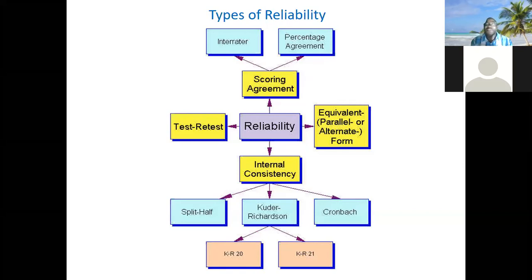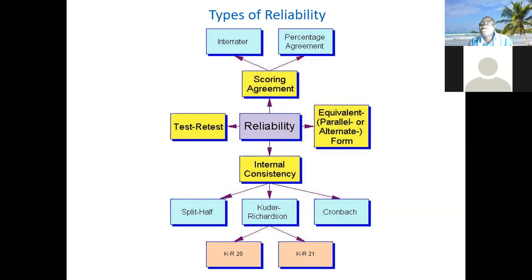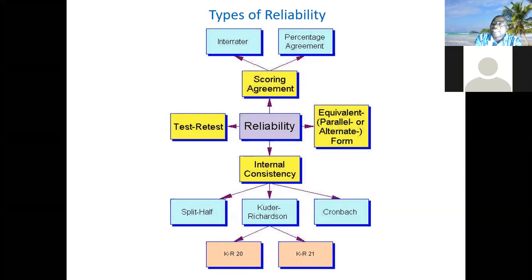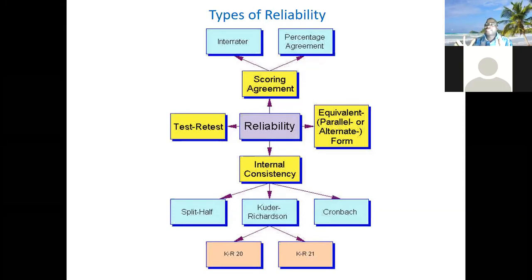Now looking at test-retest and parallel form — the judgment of somebody administering these tests has minimal influence, because the questionnaire can even be self-administered. Unlike the other type we call intra-rater and inter-rater agreement, or scoring agreement. Here, the scoring system is the same, but the issue is whether the people doing the scoring agree. For example, when assessing finger clubbing, there's a standard scale, but the problem is the individual administering it. One clinician may say grade three, another may say grade two — the rater's judgment comes into play.